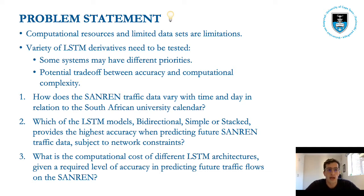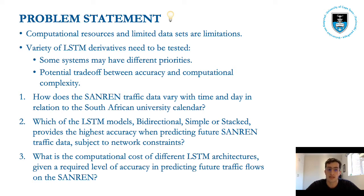Firstly, how does the SAMRAN traffic data vary with time and day in relation to the South African University calendar? Which of the LSTM architectures — baseline, bidirectional, or stacked — provides the highest prediction accuracy subject to network constraints? What is the computational cost of different LSTM architectures given a required level of accuracy? And lastly, how does changing the size of the dataset impact on the accuracy of the predictions?